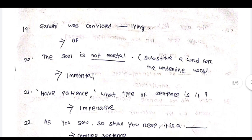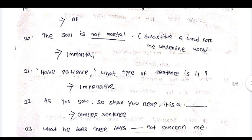Gandhi was convicted dash lying — of lying. The soul is not mortal. Substitute a word for the underlined word 'not mortal.' Answer: immortal.